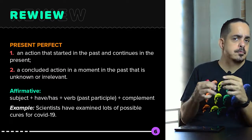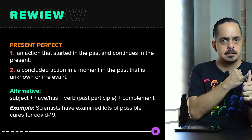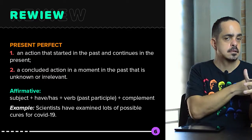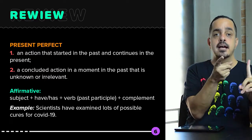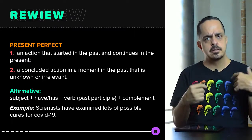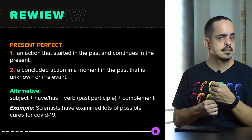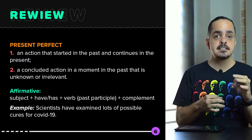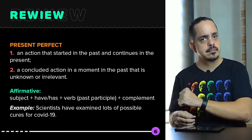Structures for present perfect. In an affirmative sentence: subject, the auxiliary have or has — remember if it's she, he, or it, use has — the main verb in past participle, and a complement.